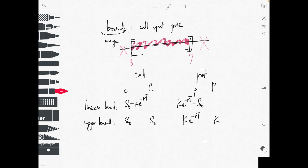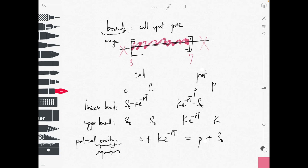The last concept I want to introduce is put-call parity. It means there is an equation — an identity — that connects the call and the put price by one formula: c plus K times e to the minus rt must equal the put price plus S0. This equation must hold in the market.